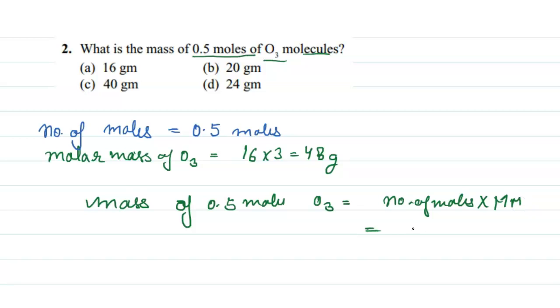So it is number of moles, 0.5, multiplied with 48, which equals 240. Here is a point, so it is 24 grams. So option D is correct. This is your right option. Thank you very much.